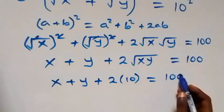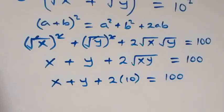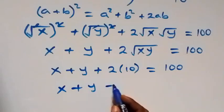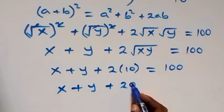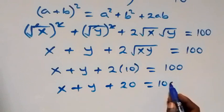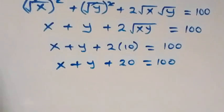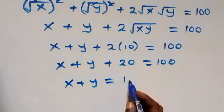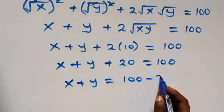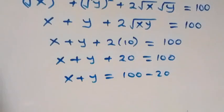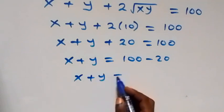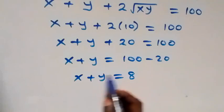We can replace √(xy) with 10, so this becomes x + y + 2·10 = 100, which gives x + y + 20 = 100. Taking 20 to the other side, we get x + y = 80.